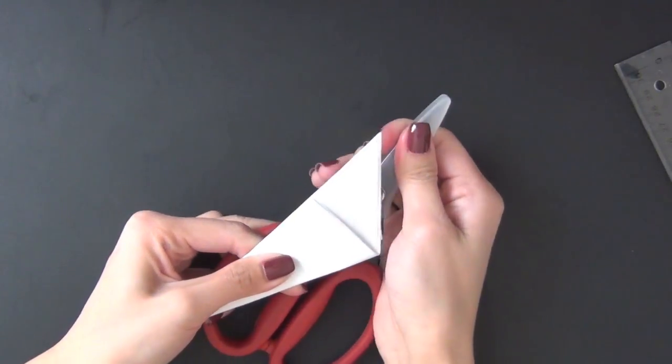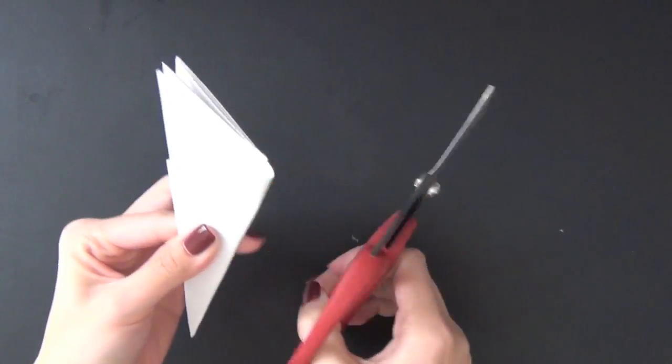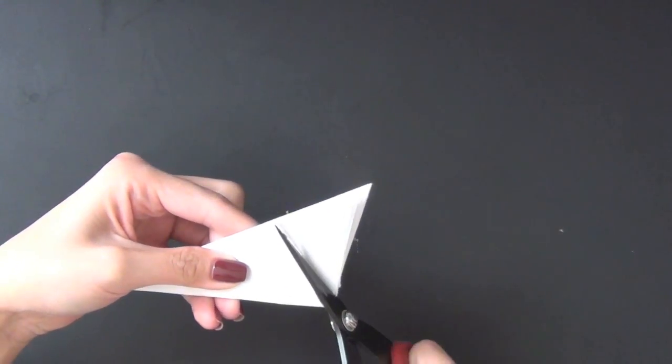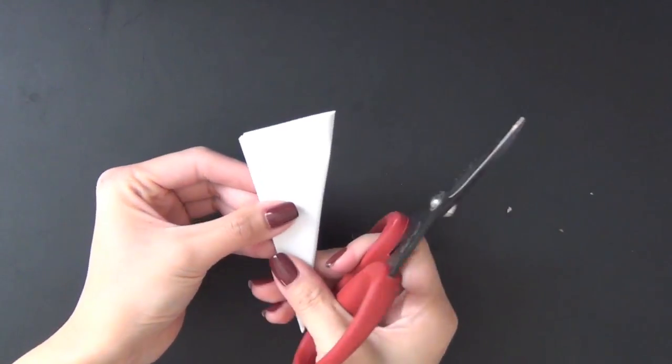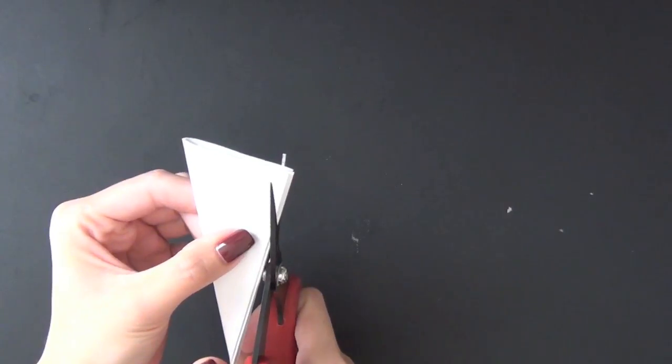So grab your scissors. I want you to use something that's quite sharp because we need to cut through many different layers of paper. You can see that I just got rid of the perfect triangle on top of that cone.